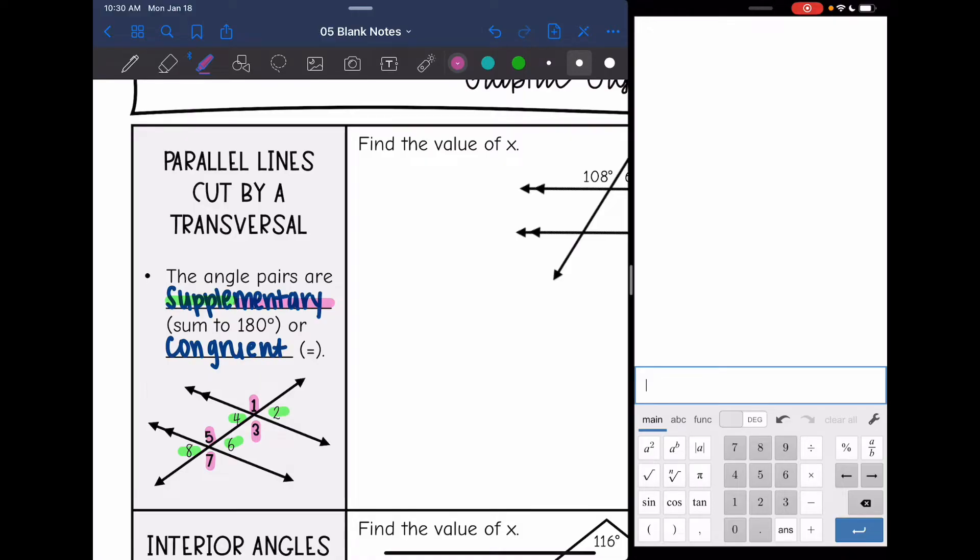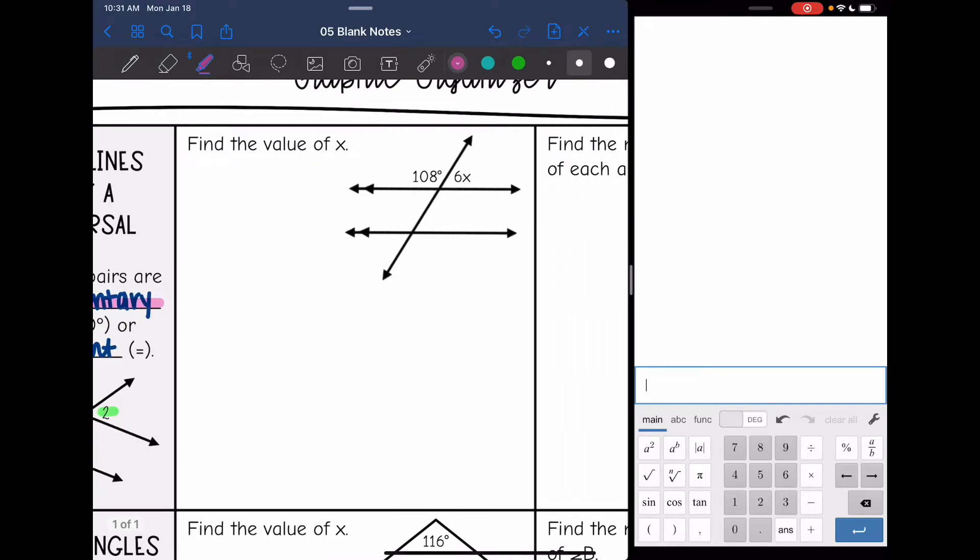So if they're different, they're supplementary, we can add them to 180 degrees. And congruent just means that they are the same, so it's either the pink or the green. We could set them equal to each other. So whenever we are solving problems like that, remember the first thing that we have to do is decide if they are congruent or supplementary.